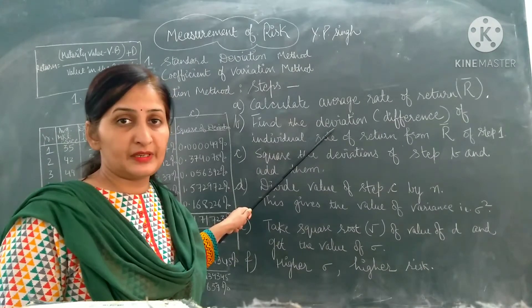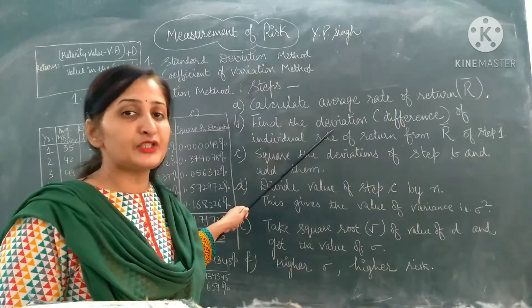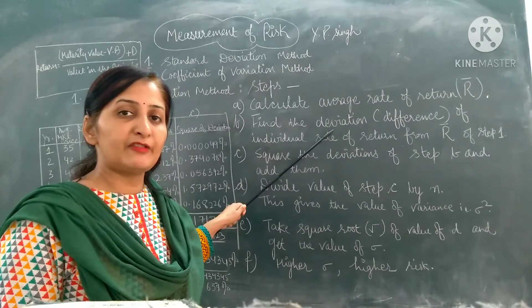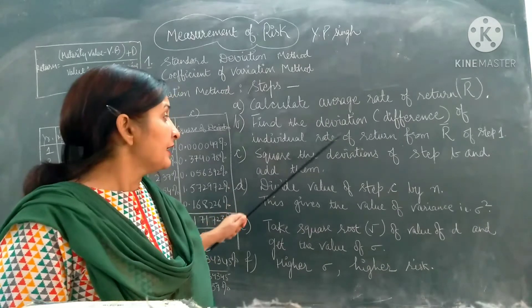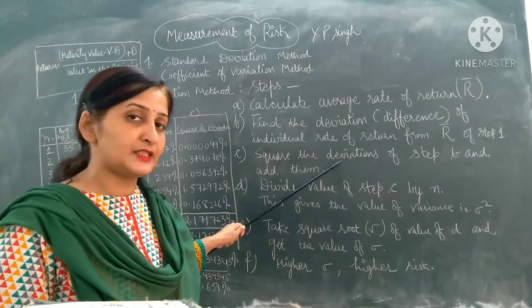The individual investment for a particular time period minus the average return, we find out the deviation, which can be positive or negative. Next step, these differences or deviations are squared.